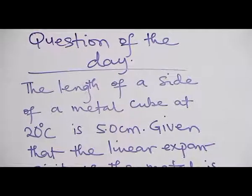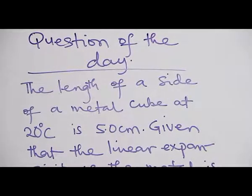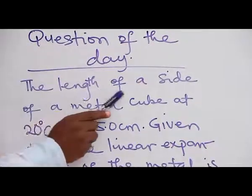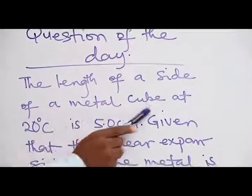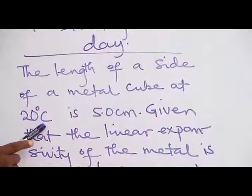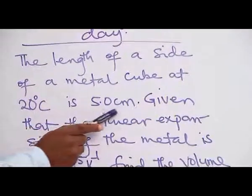Now, our question of the day. The length of a side of a metal cube at 20 degrees Celsius is 5.0 cm.